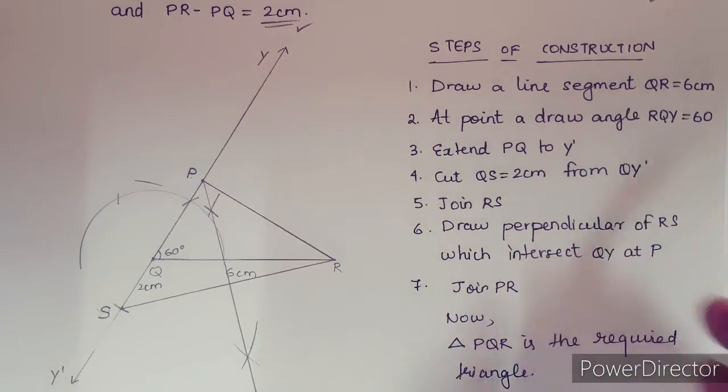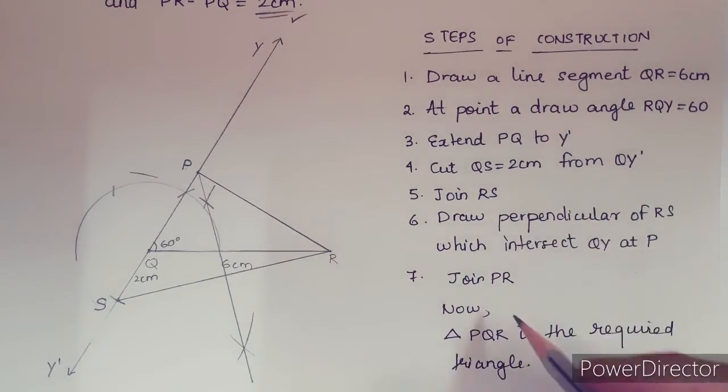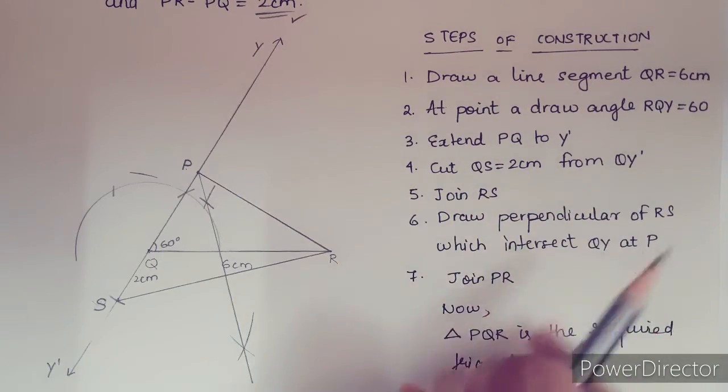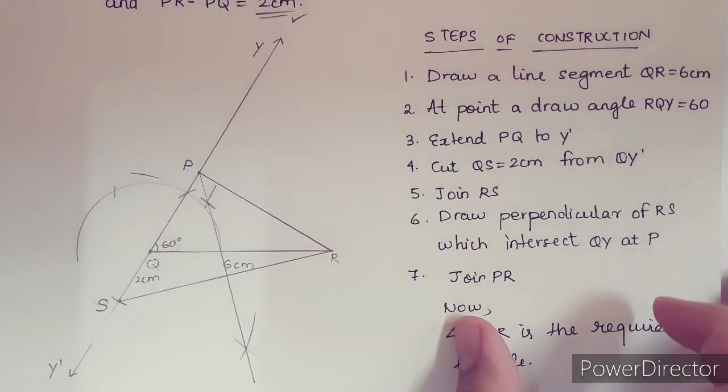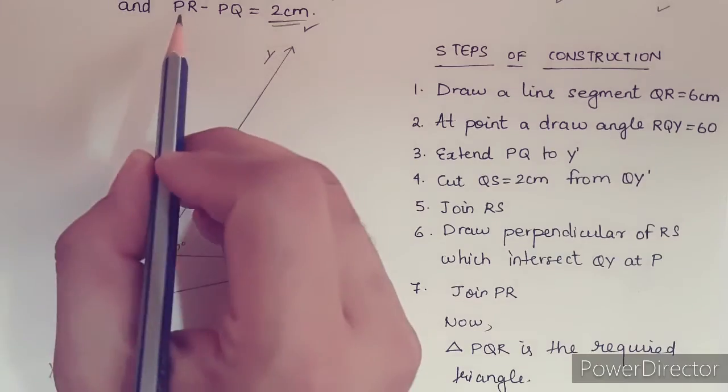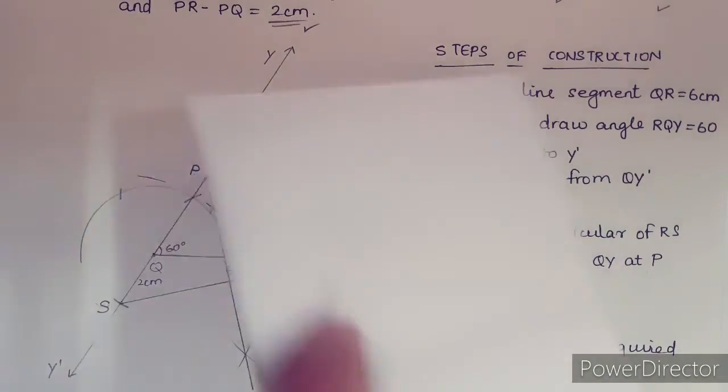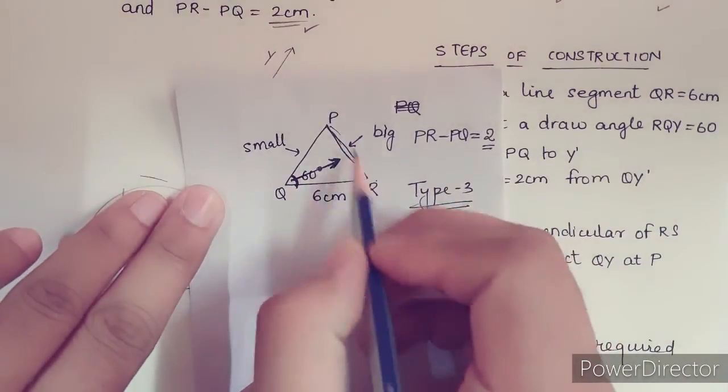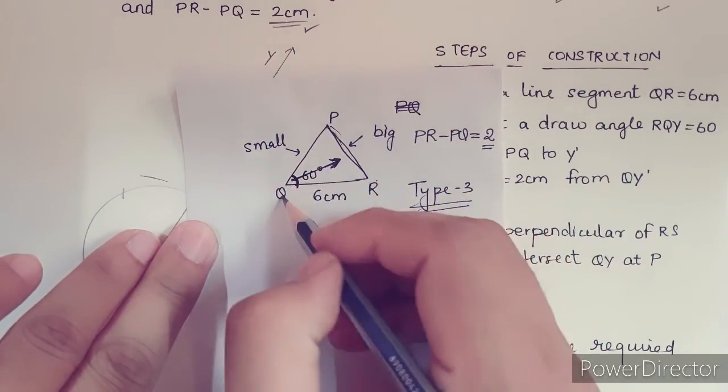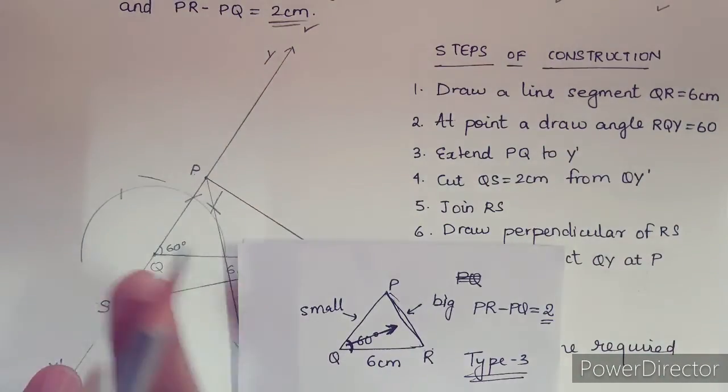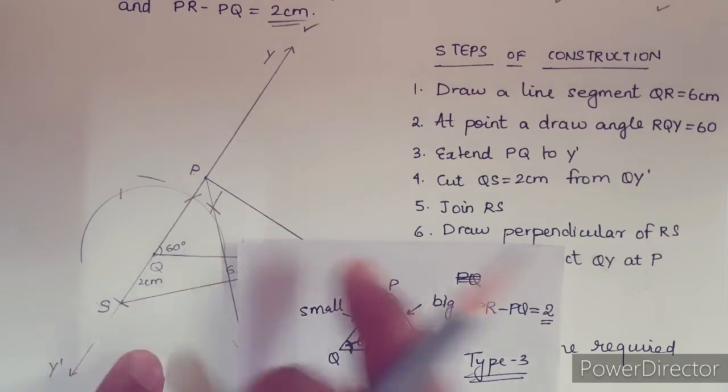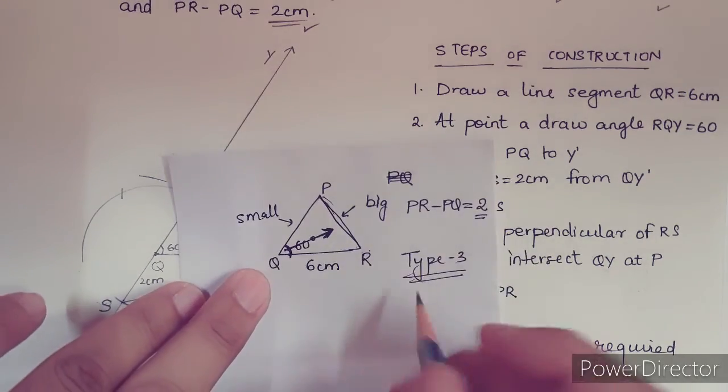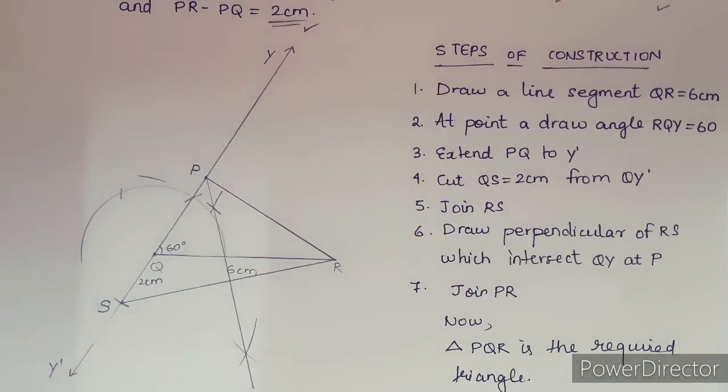These are the steps of construction. Just follow this. Remember this, this is very simple. Just remember wherein we have the difference of PQR where PR is bigger than PQ, then you need to follow this construction steps. This is type 3. I hope you have understood. Thank you.